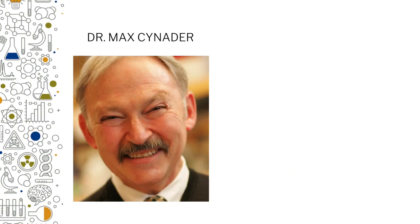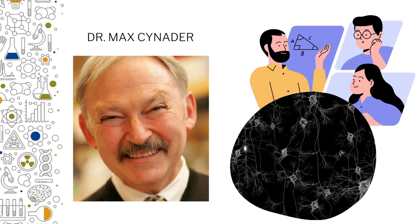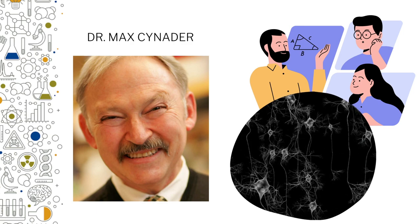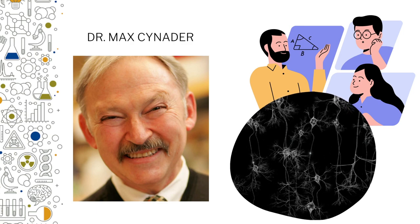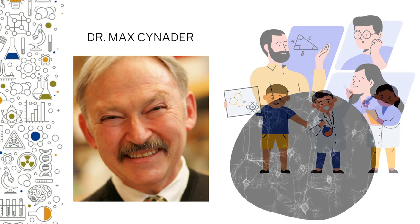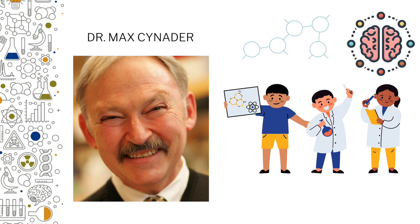Max Cynader showed how collections of neurons in different brain regions modify connections between them, based on how we learn, when we learn, and how much we learn. He discovered that the most effective way to teach people something new is to catch them young, because the greatest neuroplasticity happens in younger people compared to adults. He also figured out the chemical and biological processes to explain this neuroplasticity.